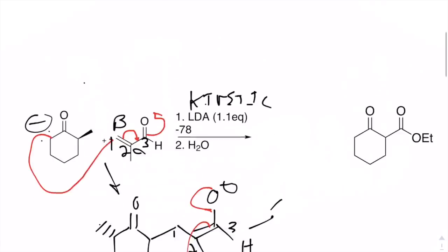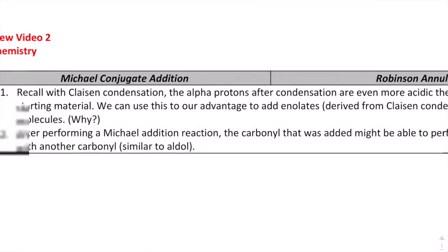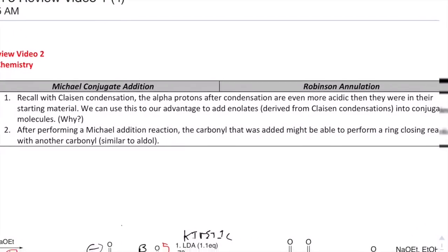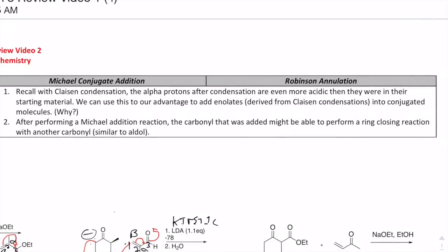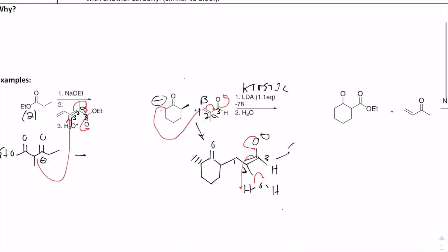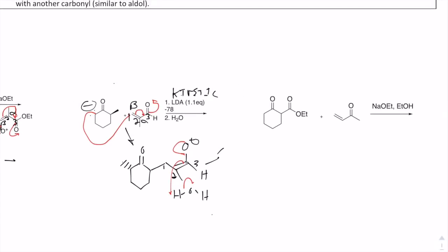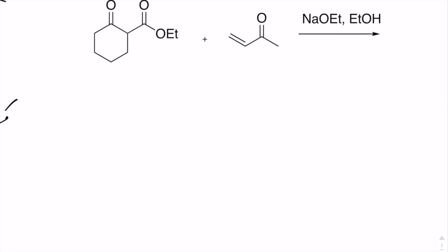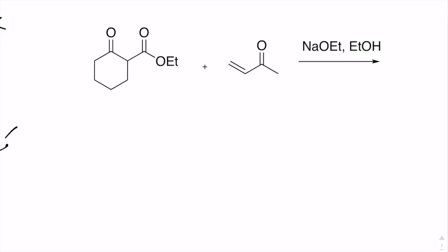So before I do this final one, I just want to go back to some considerations. When performing a Michael addition reaction, the carbonyl that was added might be able to perform a ring-closing reaction with another carbonyl similar to aldol. So that's what Robinson is. Any of these end products are susceptible to doing another ring-closing reaction like in aldol.